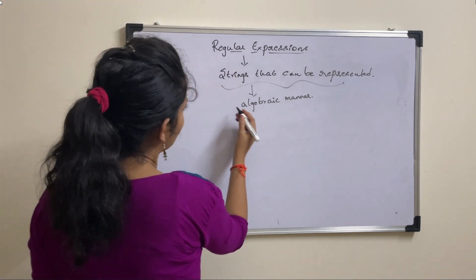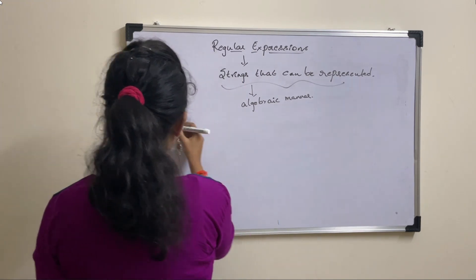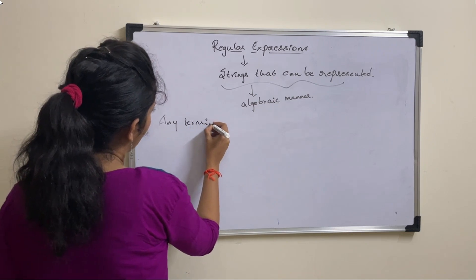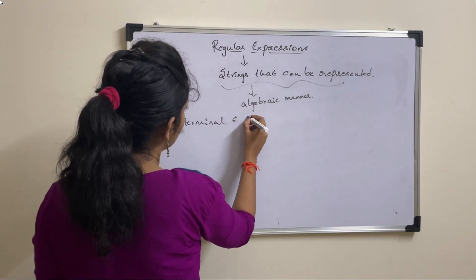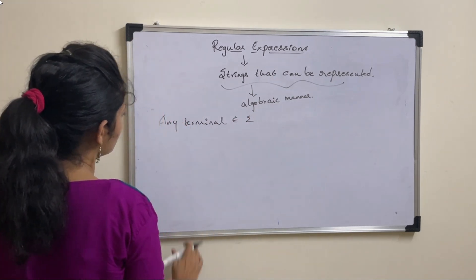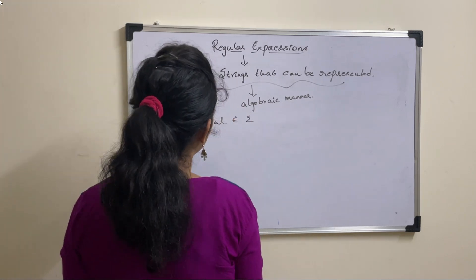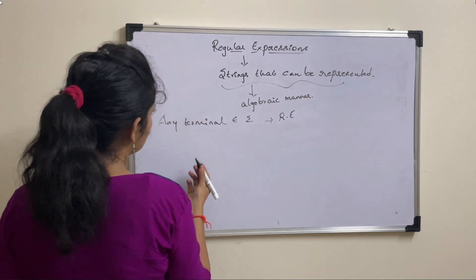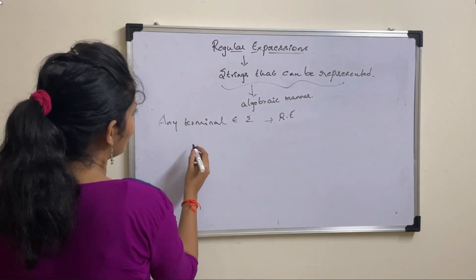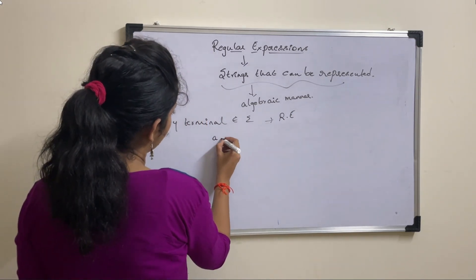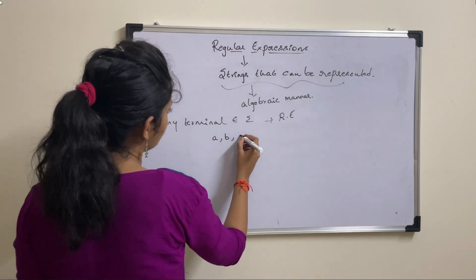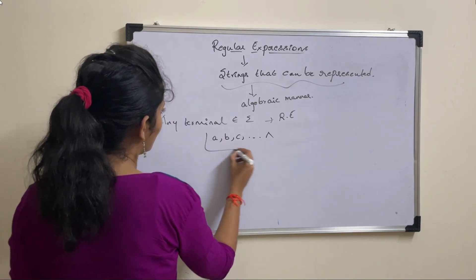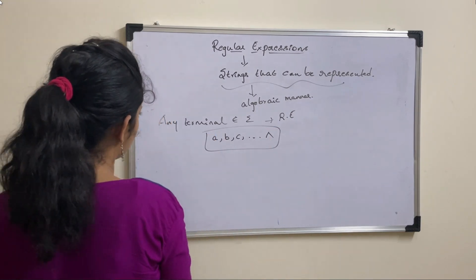If you consider what is regular expression mean: any terminal symbol which belongs to sigma can be considered as a regular expression. You can define it as, say suppose A is a terminal, B is a terminal, C and so on - all of them are considered as regular expressions.